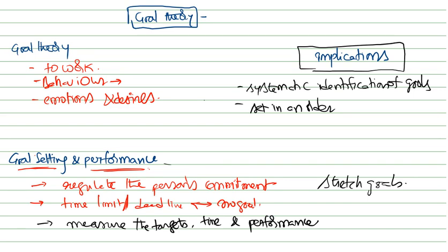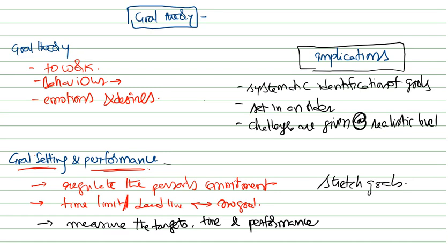Goals should be set at a challenging yet realistic level. We cannot blindly keep on giving targets; they must be achievable. Challenges are given at a realistic level rather than an imaginary level, so we can expect some performance improvement. We must also take complete, accurate, and timely feedback.